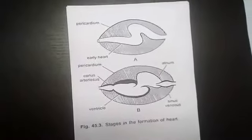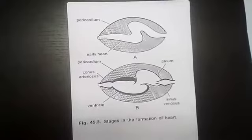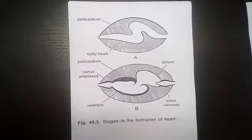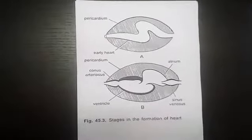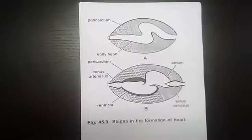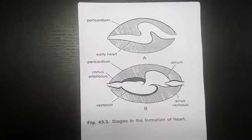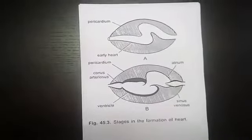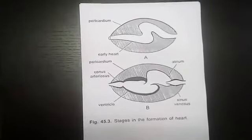Single-chambered heart is not a true heart. It is found in amphioxus which is a protochordate. A part of ventral aorta in protochordate beneath the pharynx is muscular and contractile and acts as heart.